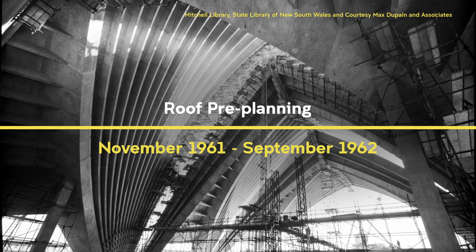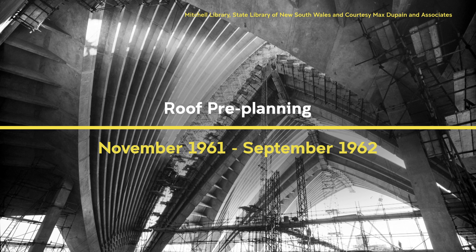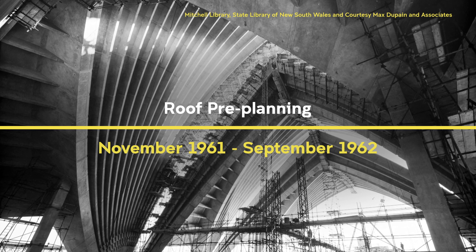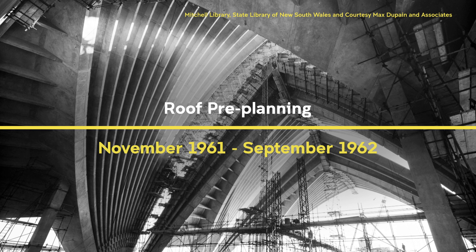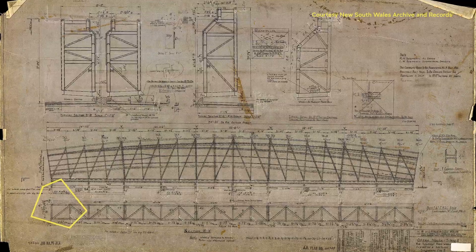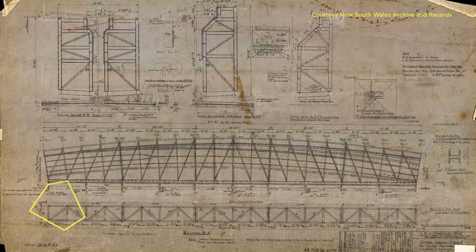Hornibrook, together with Ove Arup, established the construction strategy for the Opera House roof between November 1961 and September 1962. A set of drawings recently discovered in the NSW archive is the tangible testimony of this pre-planning phase.